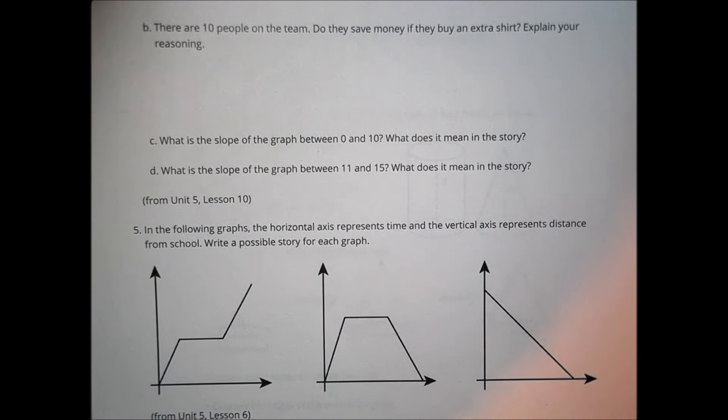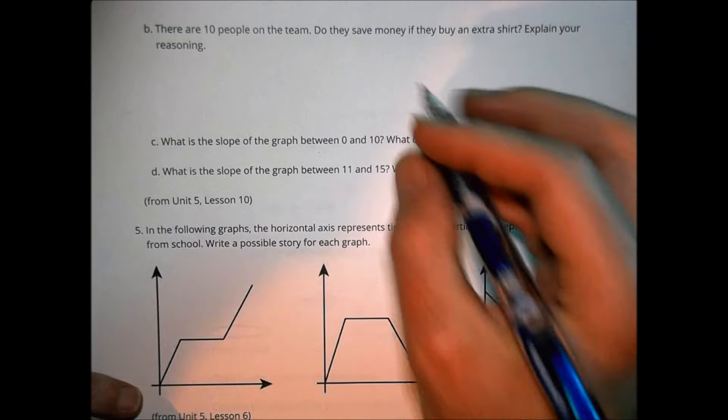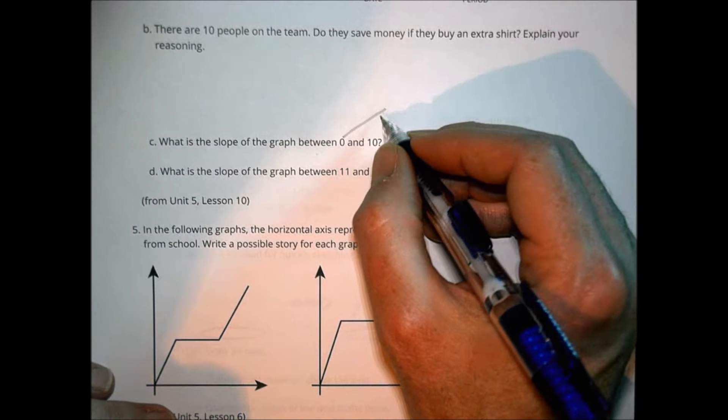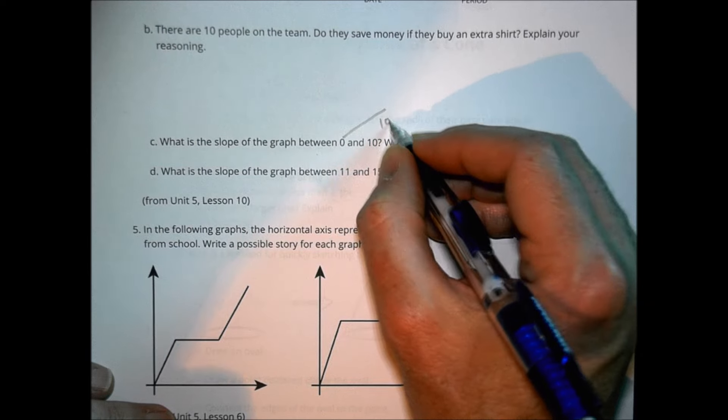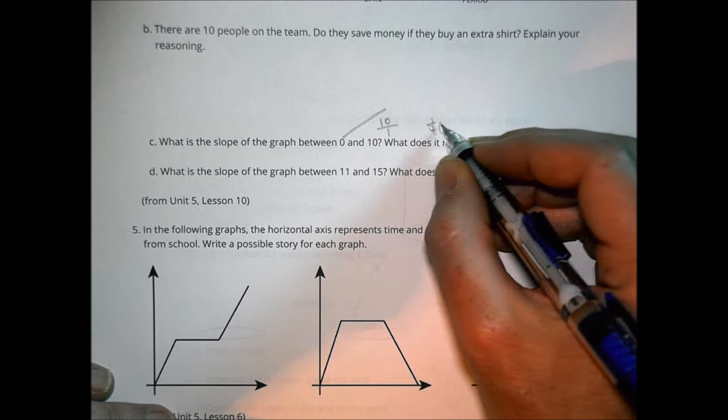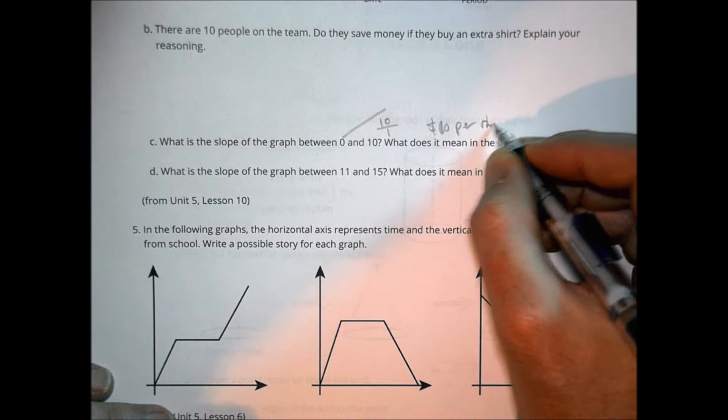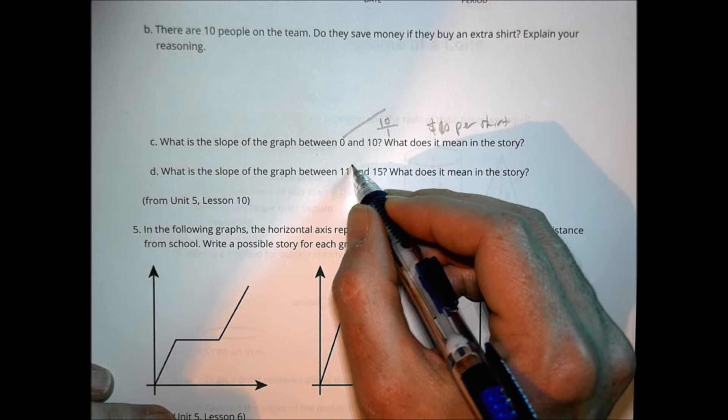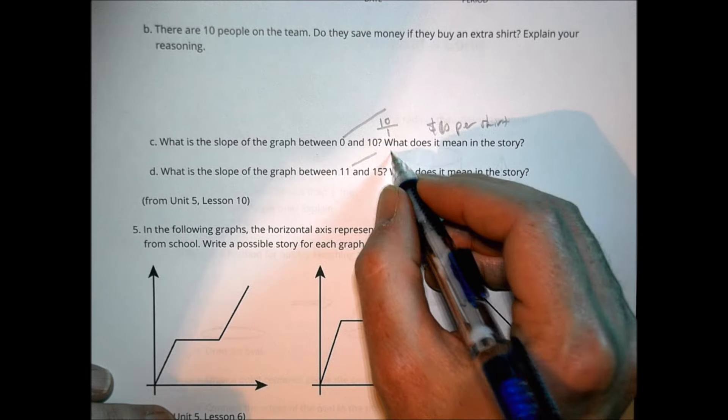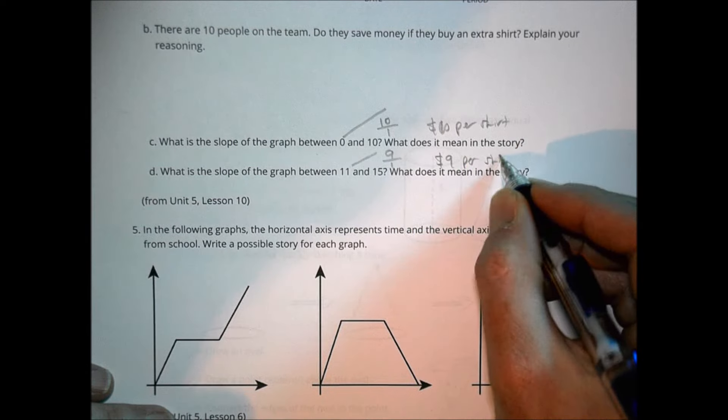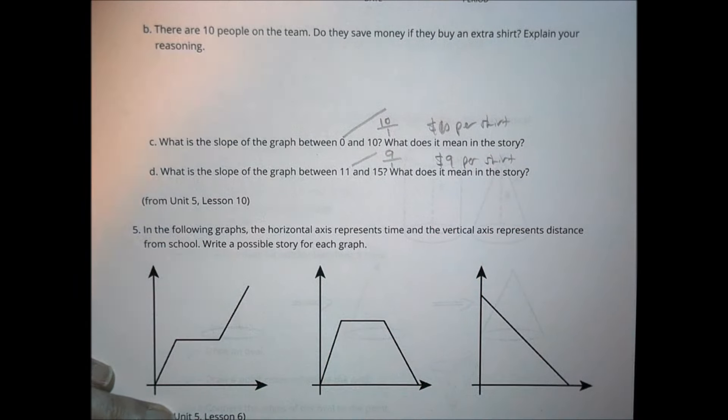What is the slope of the graph between 0 and 10? Between 0 and 10, it's $10 each. So our slope there is going to be 10 over 1, which means it costs $10 per shirt. Between 11 and 15, that graph is a little bit different, not quite as steep, but still pretty steep. It's 9 to 1, which means it costs $9 per shirt. And that's what the slope means there.